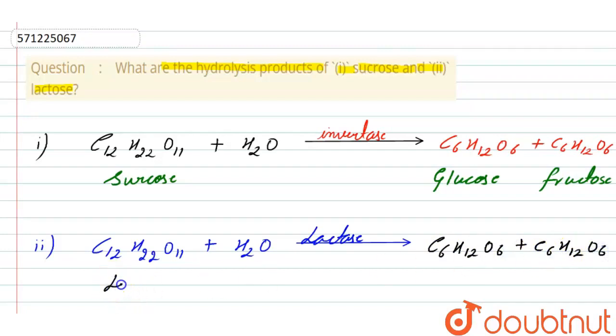So here we have lactose, and the products which we obtain are glucose and the second one is galactose.